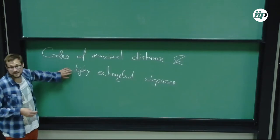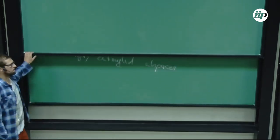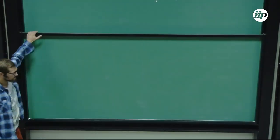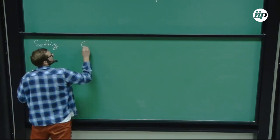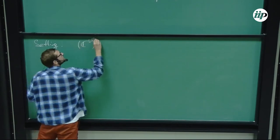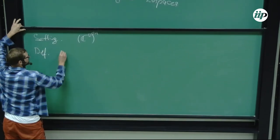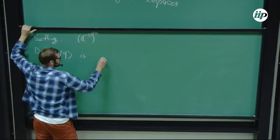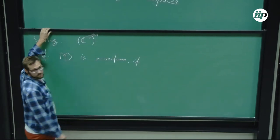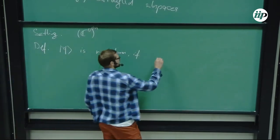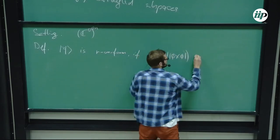It turns out that quantum MDS codes are equivalent to a type of subspace in which every vector is highly entangled. For this, I start with some simple definitions. Our setting is states in C^d tensor N — so N qudit states. Our first definition: a vector Psi is called R-uniform.